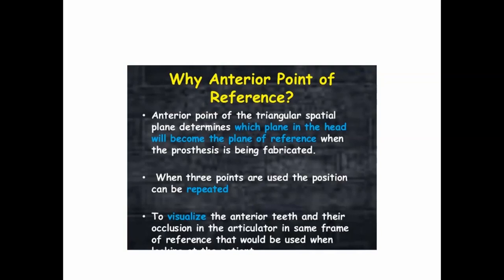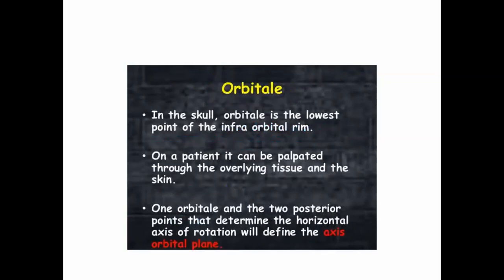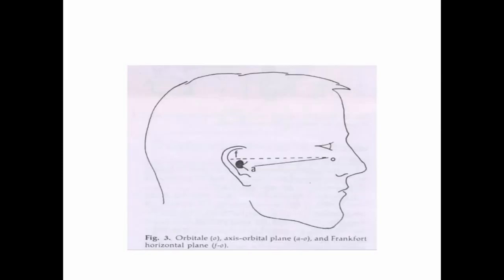Different ideal anterior reference points can now be discussed. One is the orbitale — in the skull, orbitale is the lowest point on the infraorbital foramen. It can be palpated on the patient overlying the tissue and the skin. One orbitale and the two posterior reference points will determine the horizontal axis of the patient and define the axis-orbital plane — formed by the two posterior reference points and the orbitale.